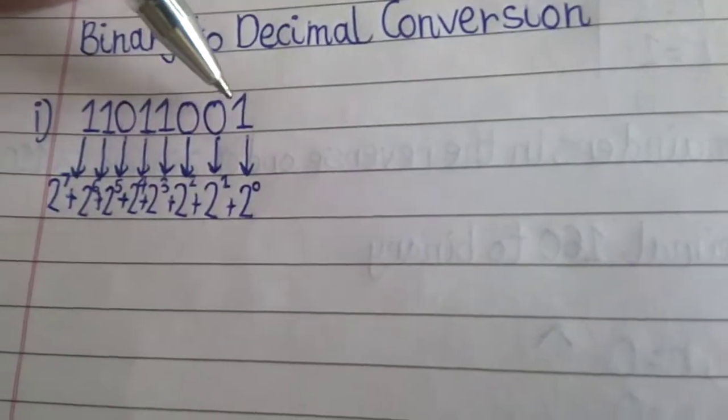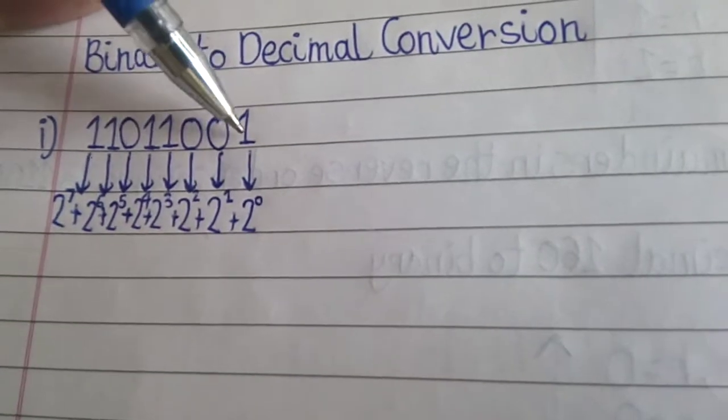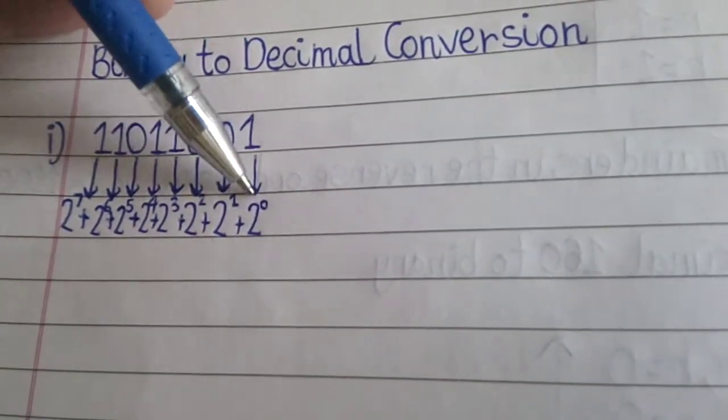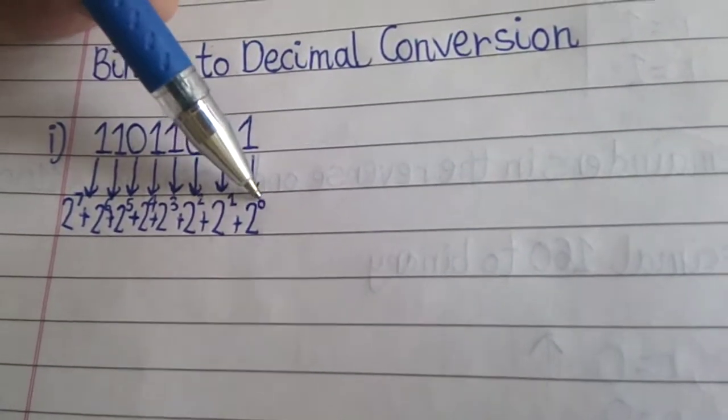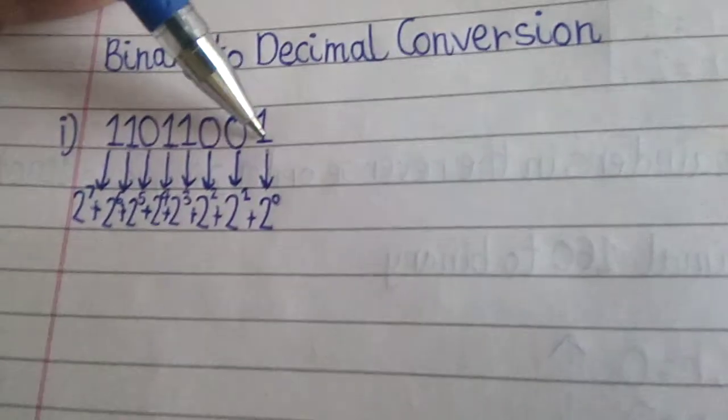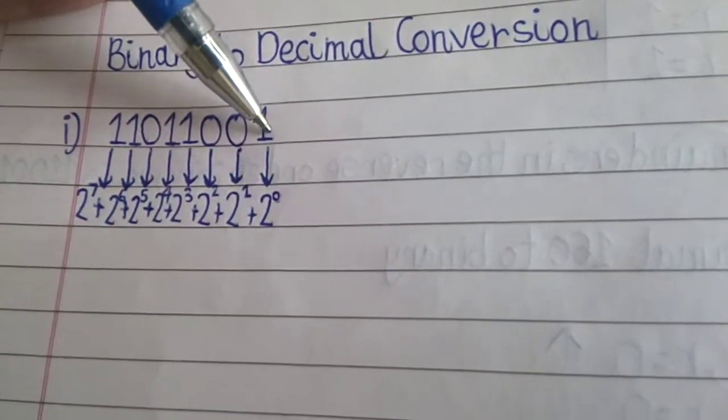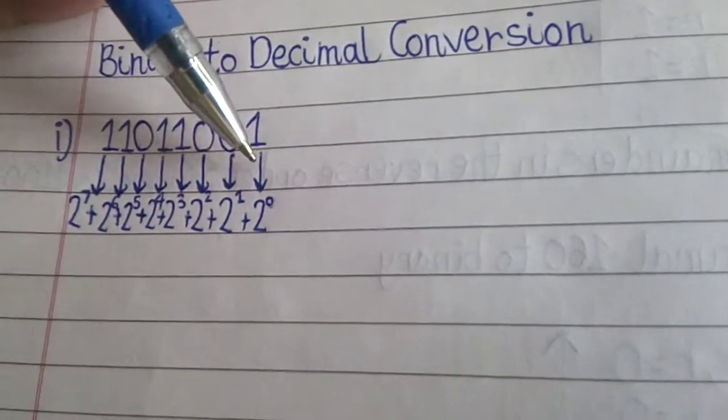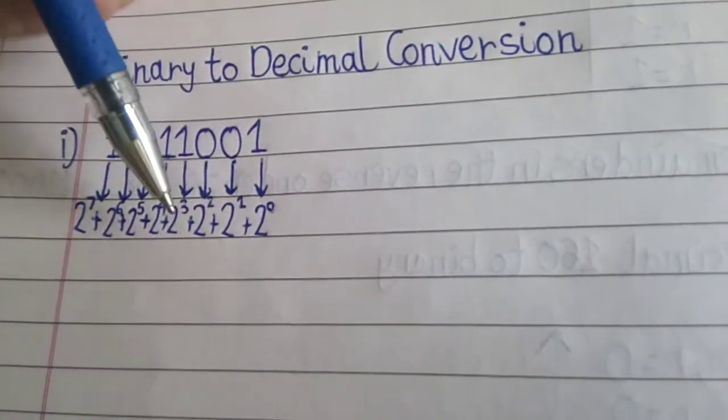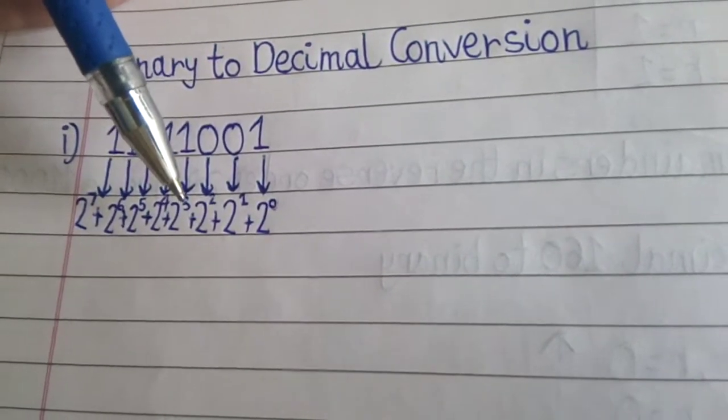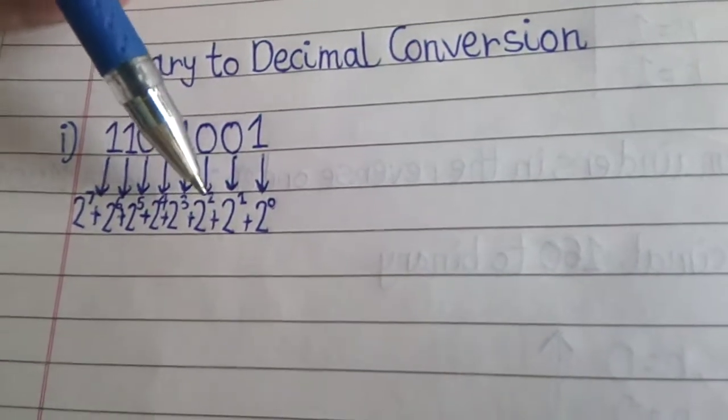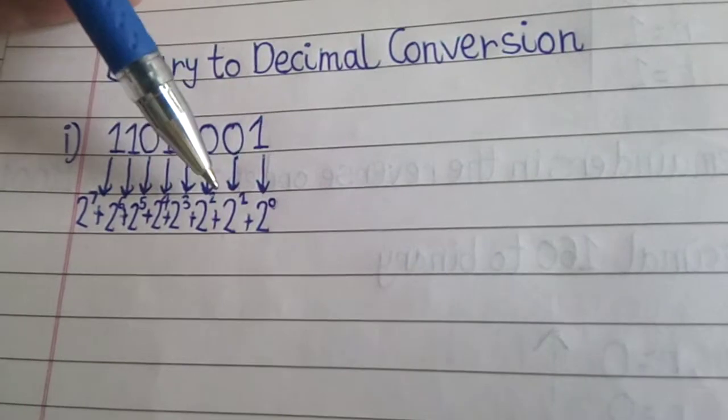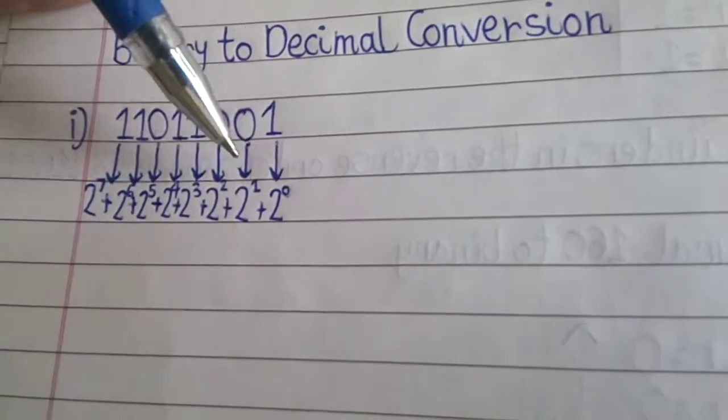So always remember, to find the decimal number, we always have to start from 2 raise to 0, as binary starts from 0. And we have to start from the right side. All of you must know LSB and MSB bit. So we have to start from the right side. And we need to add the sum of the weights to get the decimal number. So let's start.